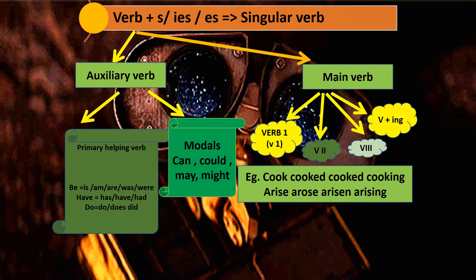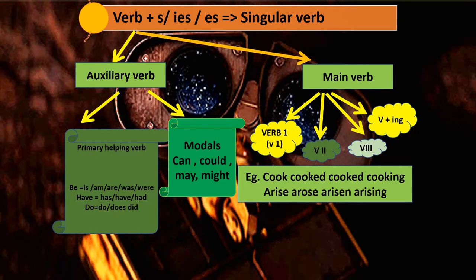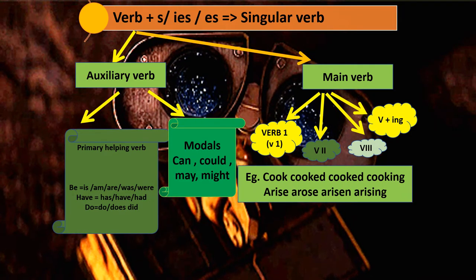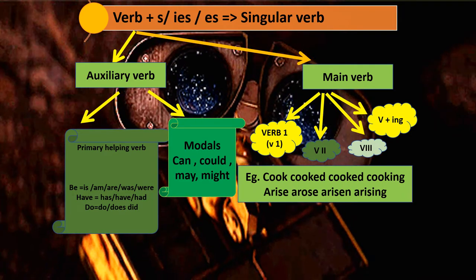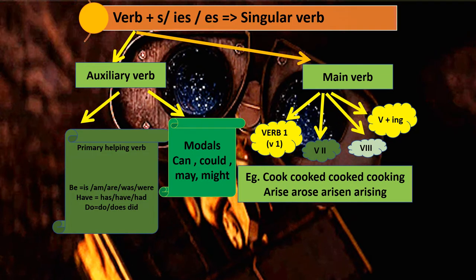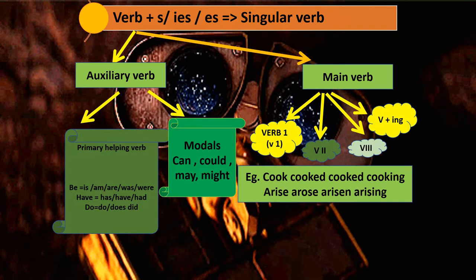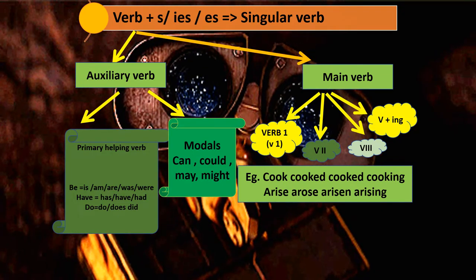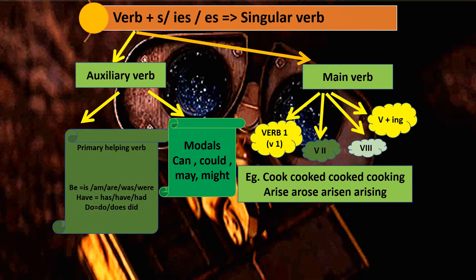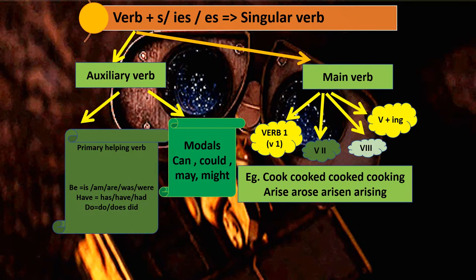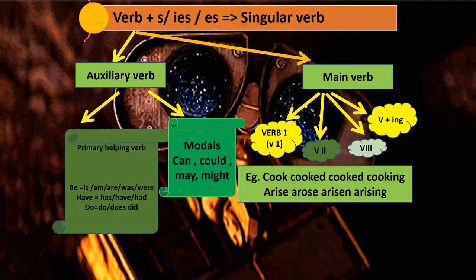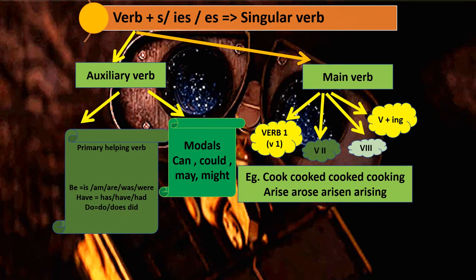These verb forms follow a pattern — cook, cooked, cooked, cooking. But sometimes verbs do not follow a pattern; they can be irregular verbs like 'arise, arose, arising'. So Verb 1 is 'arise', Verb 2 is 'arose', Verb 3 is 'arising', and Verb+ING is 'arising'.